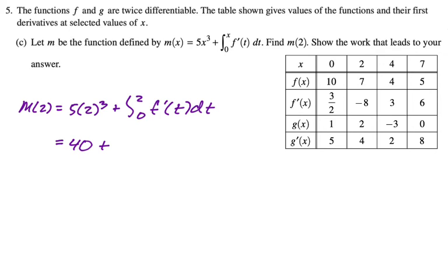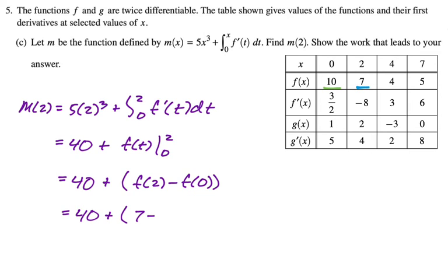All right, so that's going to be 40 plus the integral of f' is f. By the fundamental theorem, we're going to do f(t) from 0 to 2. We'll just find values in the table. So this will be 40 plus the quantity f(2) - f(0). All right, let's look for f(2) and f(0). So this will be 40, f(2) is 7 minus f(0) is 10. So we get 40 - 3, which is 37. We don't have to do anything with that. So that's our answer.